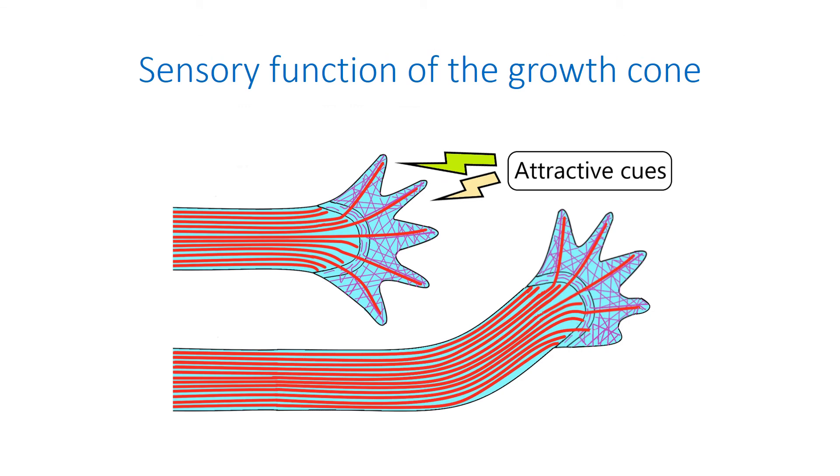The movement of the growth cones is controlled by their sensory function, that is dependent on attractive or repulsive cues from the extracellular matrix. There are many guidance cues in the regenerating axons environment. Among adhesive substrate-bound cues, the best studied are molecules of the extracellular matrix: laminin, fibronectin, and cell adhesion molecules like cadherins and integrins. Diffusible chemotropic cues are netrins, semaphorins, growth factors, and neurotransmitters. The receptors on the growth cone membrane interact with the extracellular cues, providing information about the environment. This information is analyzed by the intracellular signaling machinery that leads to an appropriate response, for example, a change of growth direction.